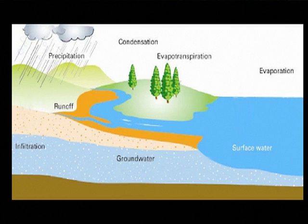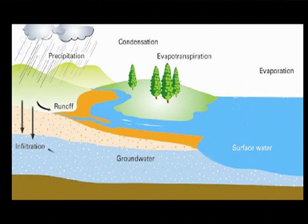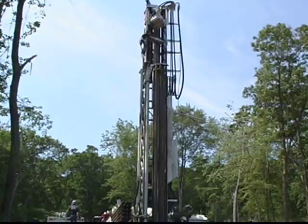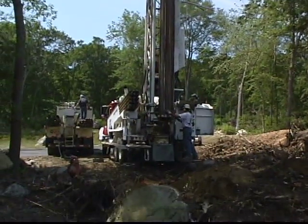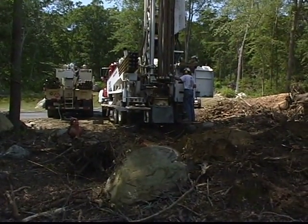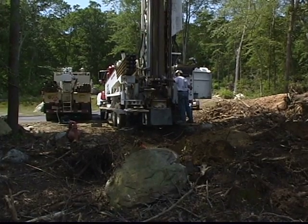As water falls to the earth, it's going to move over the landscape in this watershed area. The water can run off into surface waters, or it can seep down through the soil profile, recharging the groundwater system. And we put our wells down into the groundwater so that we can pump water to our homes for our use.